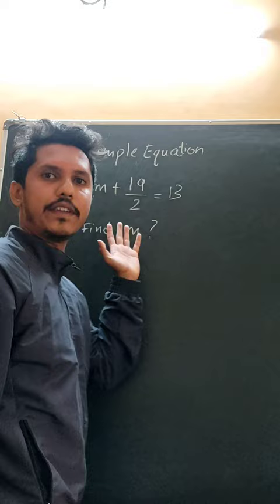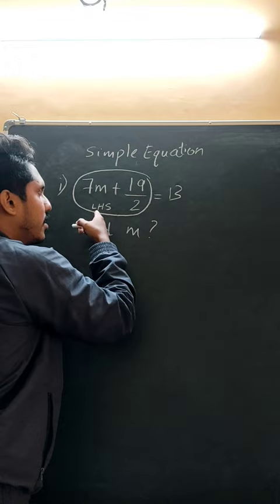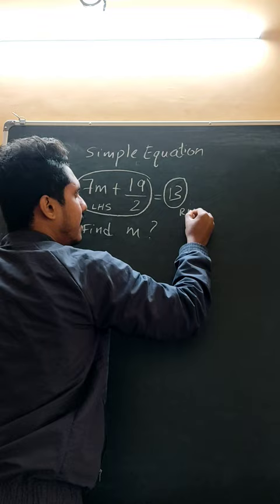See, this part is called LHS — LHS is nothing but left hand side. This 13 on the other side is RHS — right hand side.